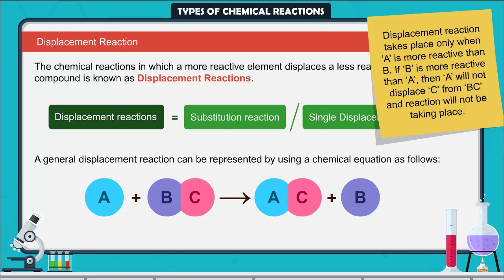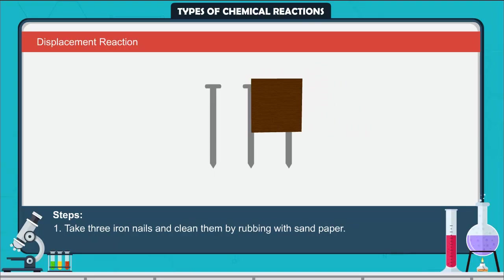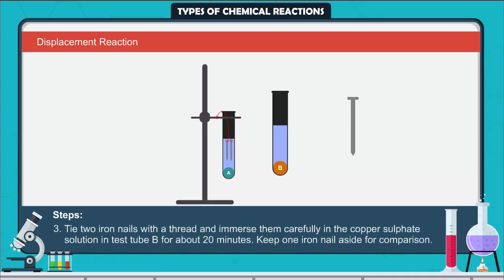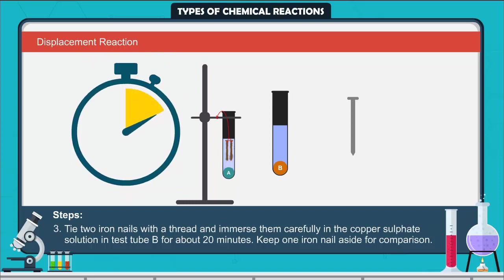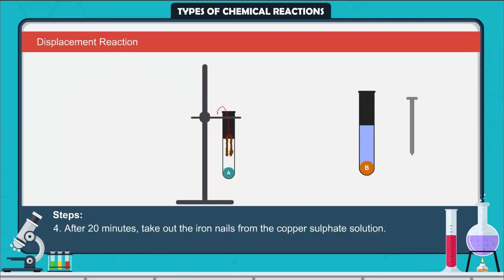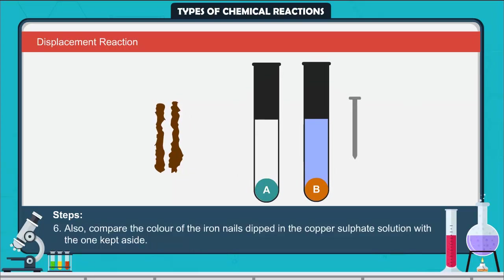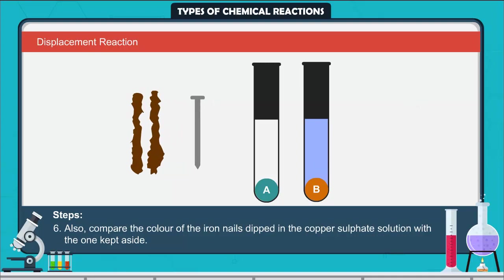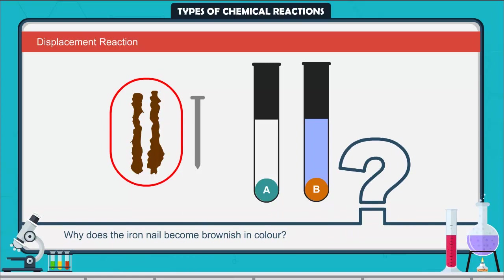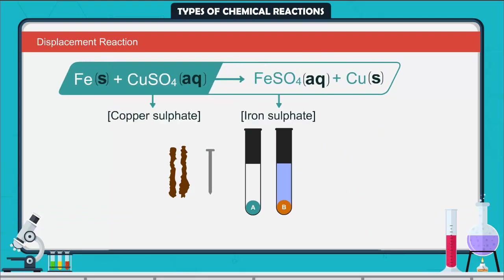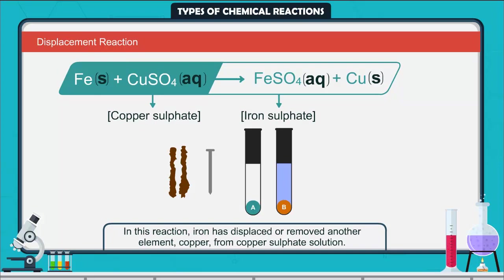Activity: Take three iron nails cleaned with sandpaper. Take two test tubes A and B, each with about 10 ml of copper sulfate solution. Tie two iron nails with a thread and immerse them in the copper sulfate solution in test tube A for about 20 minutes, keeping one iron nail aside for comparison. After 20 minutes, take out the iron nails and compare the intensity of the copper sulfate solutions in A and B, and compare the color of the nails. The iron nail becomes brownish and the blue color of copper sulfate fades because iron has displaced copper from the copper sulfate solution.